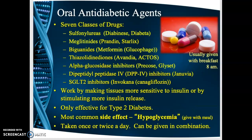Now, oral anti-diabetic agents: there are seven classes, and you'll learn all the specifics in pharmacology. These medications work by making tissues more sensitive to the patient's own insulin or by increasing insulin release. Oral anti-diabetic agents only work for type 2 diabetics — not type 1, because type 1 patients have no beta cells and produce no insulin.